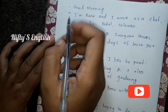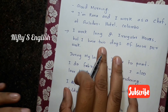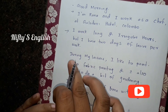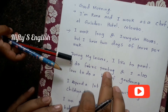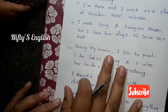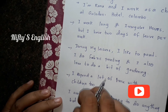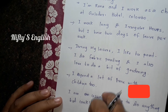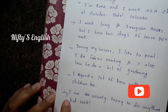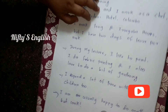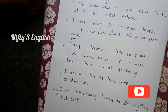So let's recap: first one is salutation, second one is your name and workplace, third one is your working hours, fourth one is your free time or leisure activities, and fifth one is about your family.